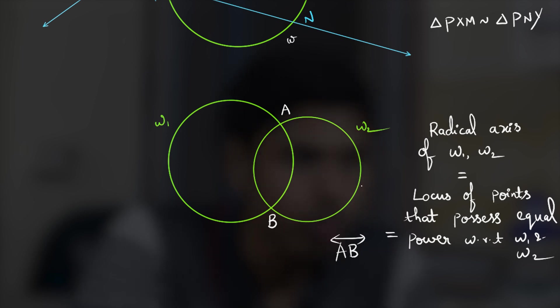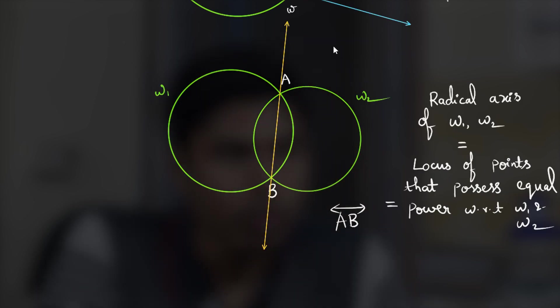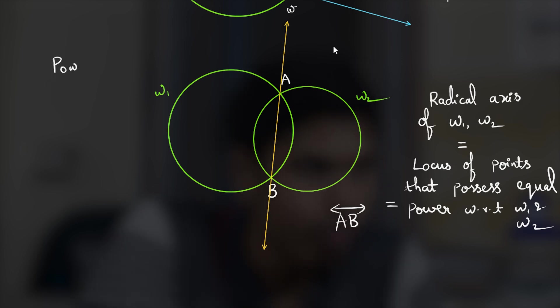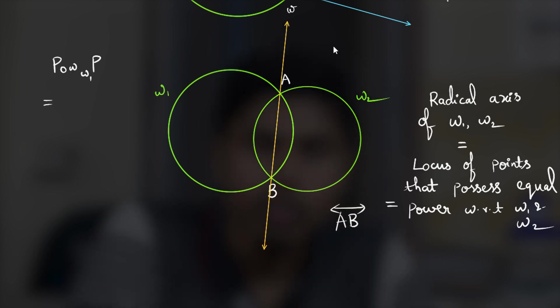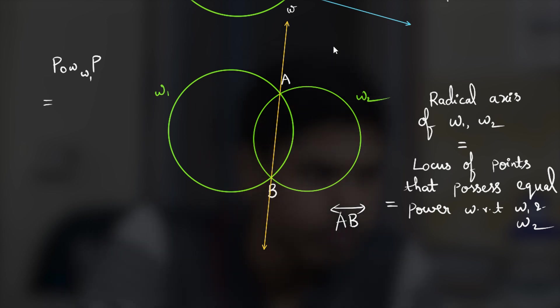So let me draw that. So why will this line be the locus of points that possess equal power? First we express power of a point P with respect to the circle omega 1. Notice that power can be written of any point P.